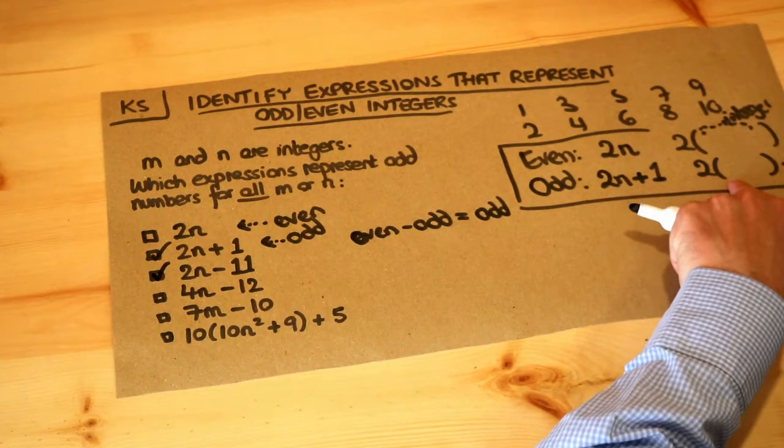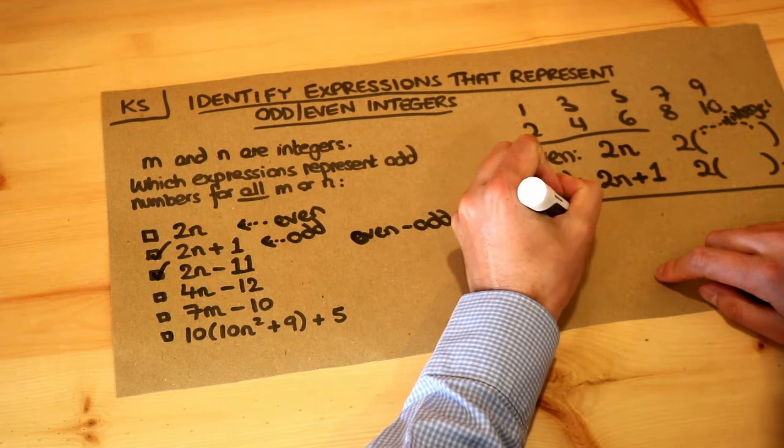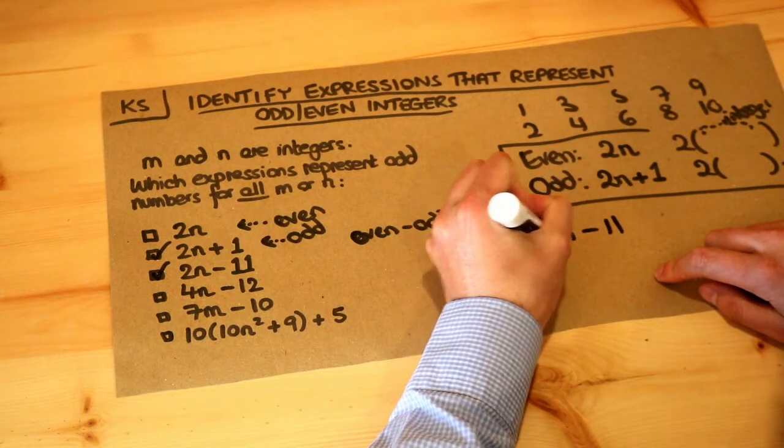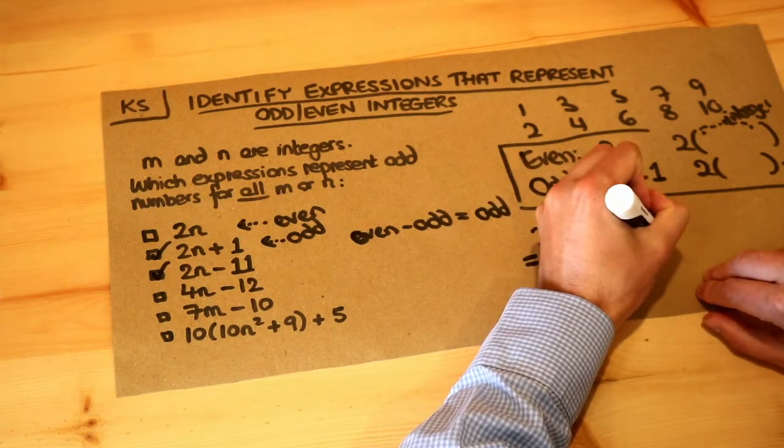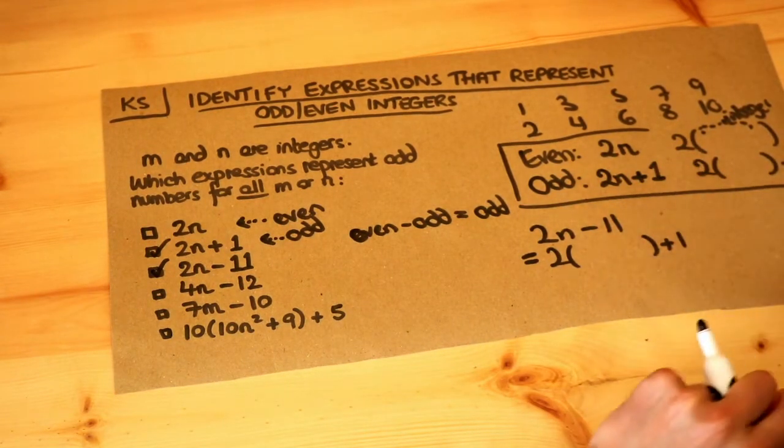And if you wanted to put it in this form, 2 times something plus 1, we could do that. So let's do that over here. 2n minus 11, we want to write it in the form 2 times something plus 1, because then we know from this box that would then be an odd number.